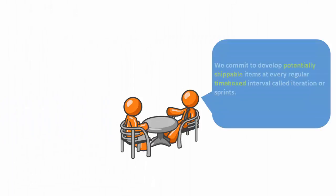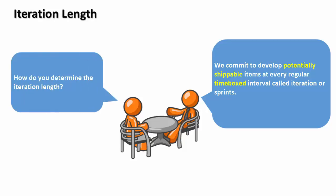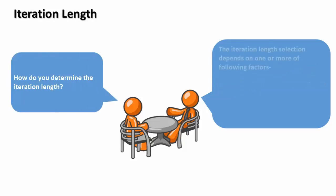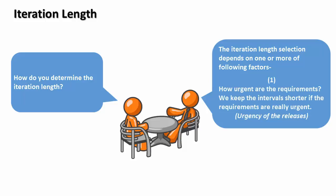We commit to develop potentially shippable items at every regular time-boxed interval called iteration or sprint. How do you determine the iteration length? The iteration length selection depends on one or more factors. Number one: how urgent are the requirements? We keep the intervals shorter if the requirements are really urgent.